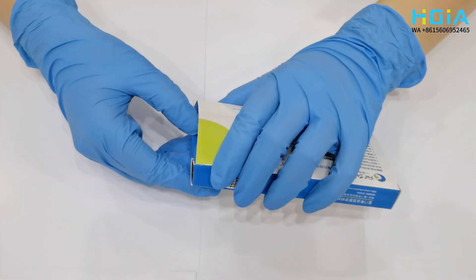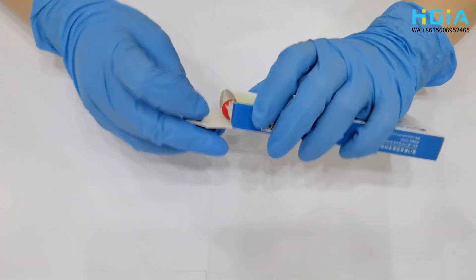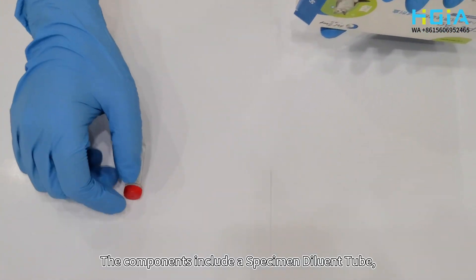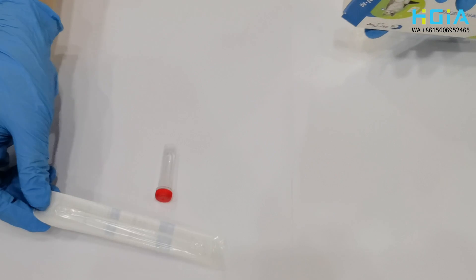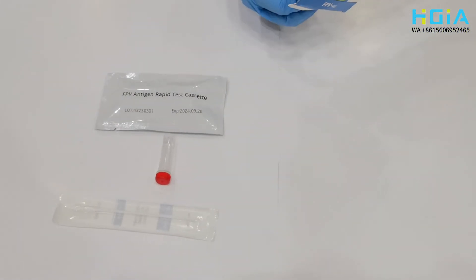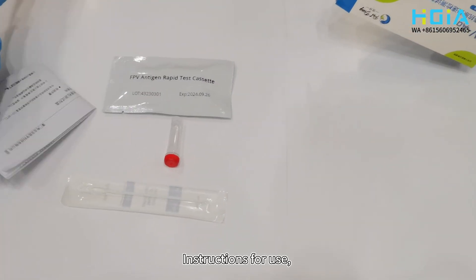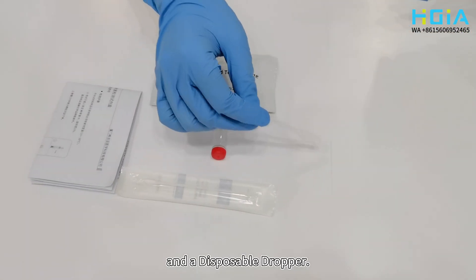Open the package and take out the components. The components include a specimen diluent tube, a disposable swab, a test card, instructions for use, and a disposable dropper.